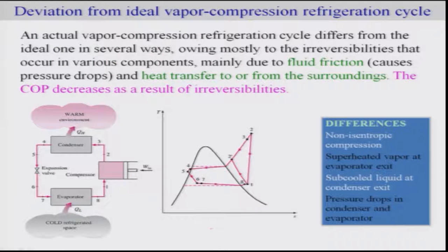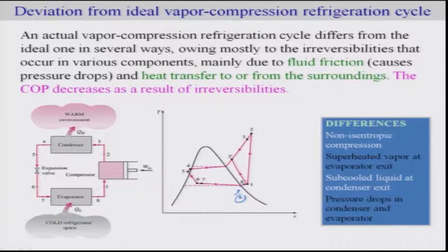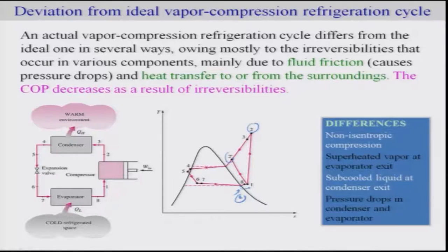In reality, there will be deviations from the ideal vapor compression refrigeration cycle, mainly due to fluid friction across the pipes and heat transfer from or to the surroundings. In the practical or real scenario, there may be pressure losses, so it is more useful to have the refrigerant slightly superheated before it enters the compressor. At the compressor, friction would increase entropy, while heat transfer can increase or decrease entropy depending on its direction. The exit state can end at point 2 or 2' depending on which effect dominates.